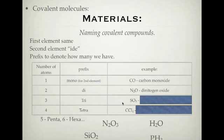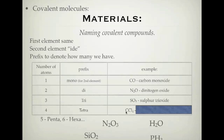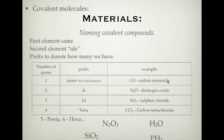For 'tri', here's an example: SO3. We have one of the first element, sulfur, which stays the same. Then we have oxide — we have three of them, so it's trioxide. So it's sulfur trioxide. For 'tetra', we have carbon tetrachloride. The first element keeps the same name — carbon, nitrogen, sulfur, carbon. The second element always ends in '-ide': oxide, oxide, oxide, and chloride. We use a prefix to denote how many we have.